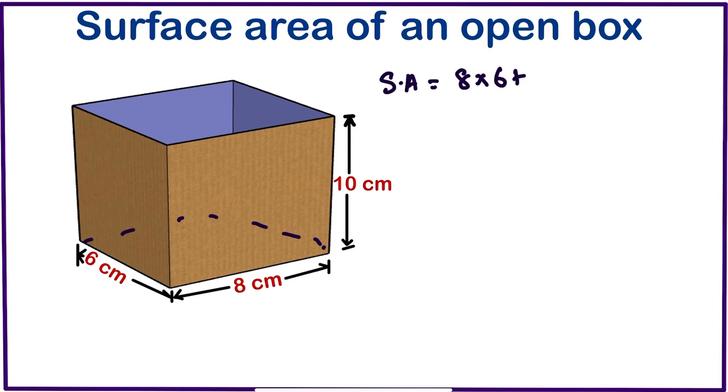At the front we have this rectangle. This rectangle at the front is the same as the rectangle behind the box. So at the front and back is the same. At the front we have 8 and 10, so the area will be equal to 8 times 10 times 2, because the front and back is the same.